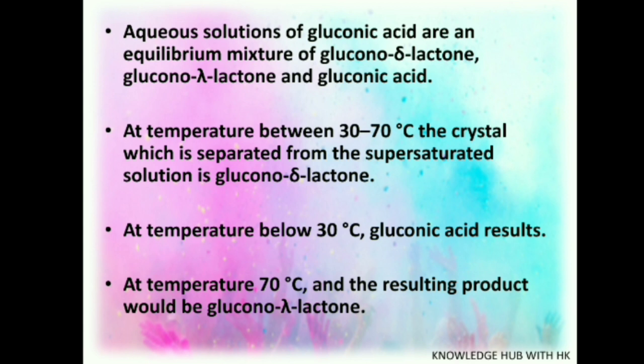Aqueous solution of gluconic acid contains an equilibrium mixture of glucono-delta-lactone, glucono-lambda-lactone, and gluconic acid. At a temperature between 30 to 70 degrees Celsius, the crystal separated from the supersaturated solution is glucono-delta-lactone. At a temperature below 30 degrees Celsius, the resulting product would be glucono-lambda-lactone.